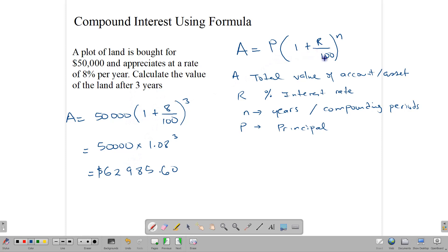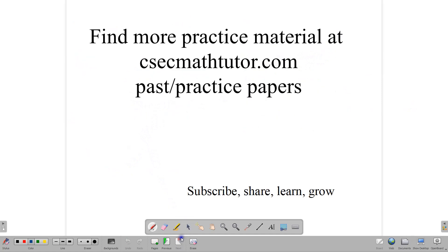Principal times one plus R over 100. We just substitute our numbers and let our calculator do the work. To find more papers and practice material, go to csegmathstutor.com. Go into the past paper section. And remember, there are solutions there as well. If you want to look at the solutions to check your accuracy and your work, subscribe, share, and best wishes as you continue preparing for your exam. Thank you.